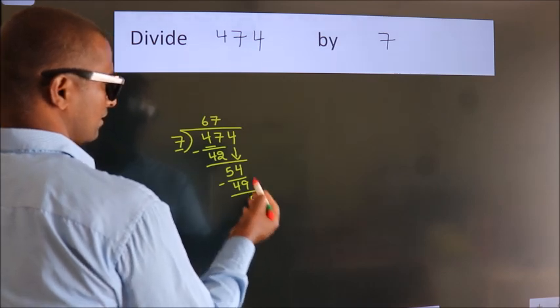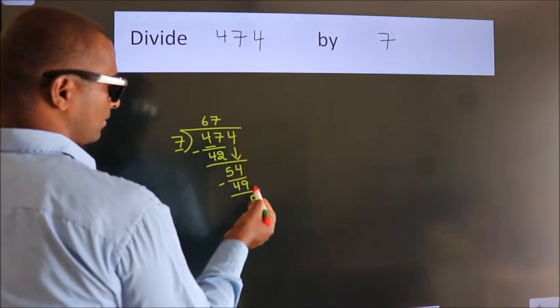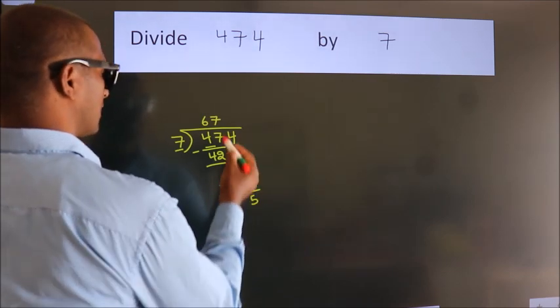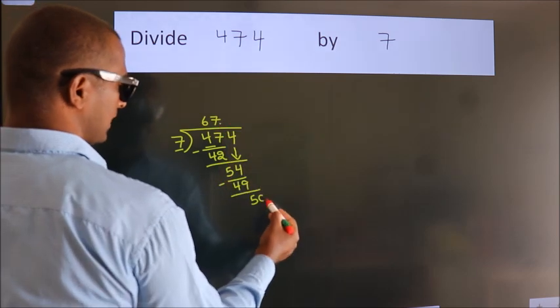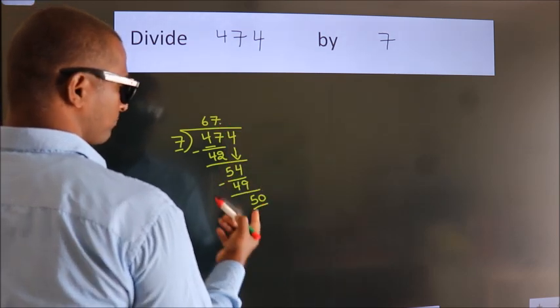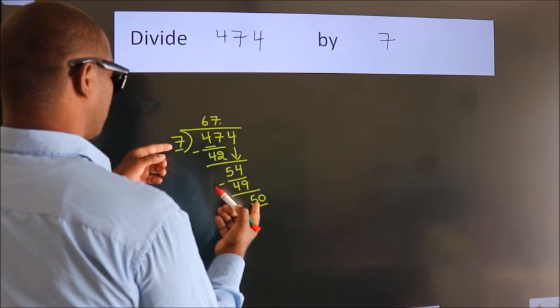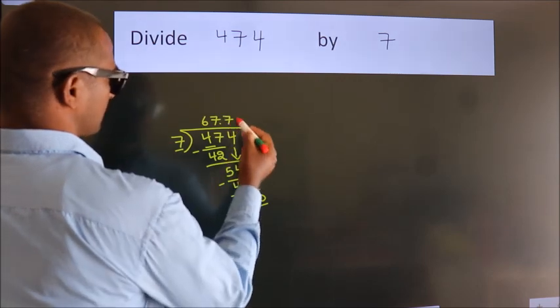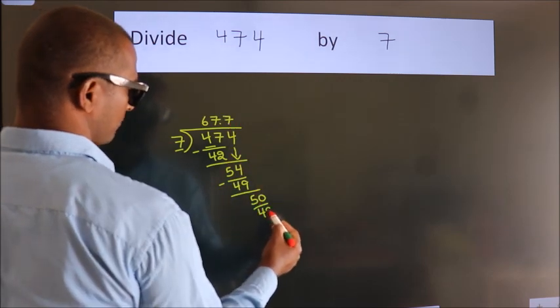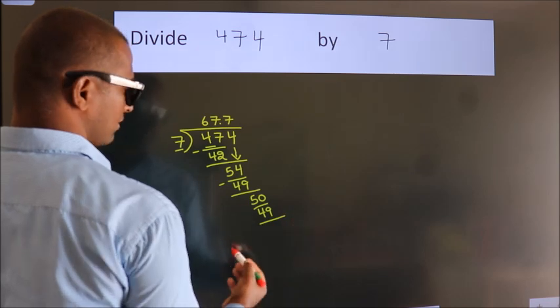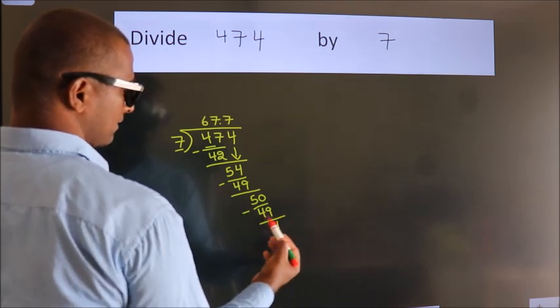After this, no more numbers to bring down. So what we do is put a dot and take 0, making 50. A number close to 50 in the 7 table is 7 times 7, 49. Now we subtract and get 1.